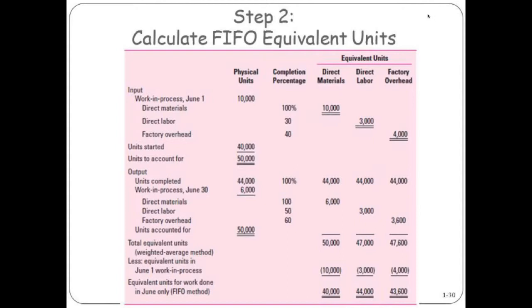Down here, though, we have the total equivalent units we calculated for the weighted average method. We then subtract out the equivalent unit, the work that was done in a previous period. That's what's being subtracted out over here.